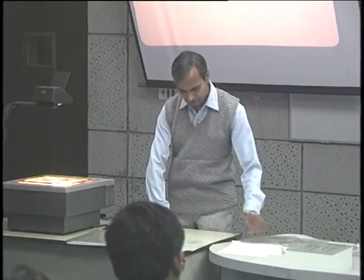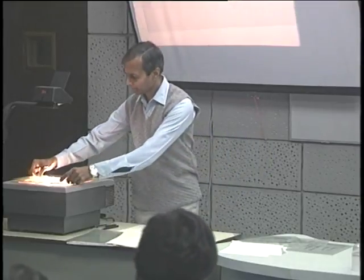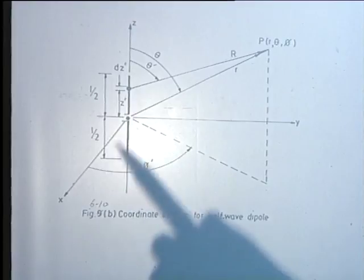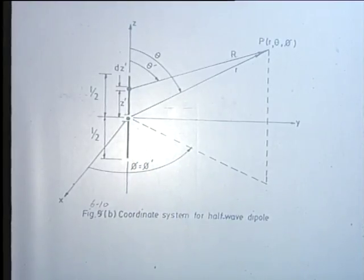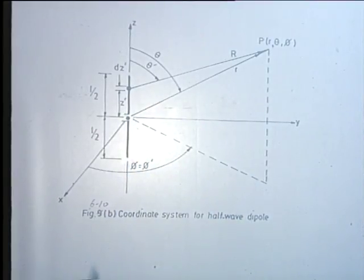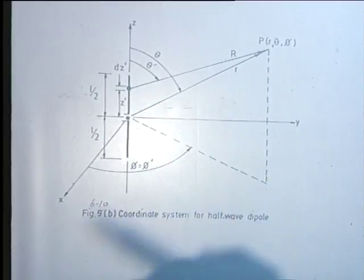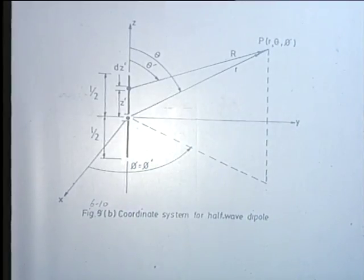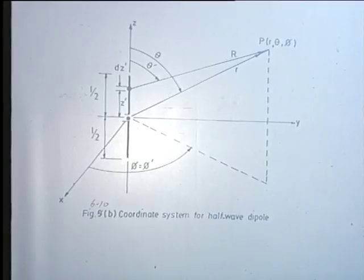For this purpose, we consider again a wire antenna — a linear antenna located at the origin of the coordinate system, so that the origin is symmetrically located with respect to the length of the antenna. The antenna has an overall length L. To begin with we will keep the considerations general, and later obtain results when this length is half a wavelength. The objective is to find out the fields at a distant point P with coordinates R, theta, phi.